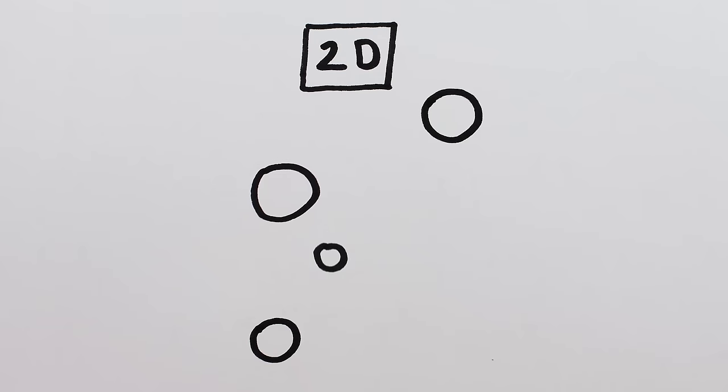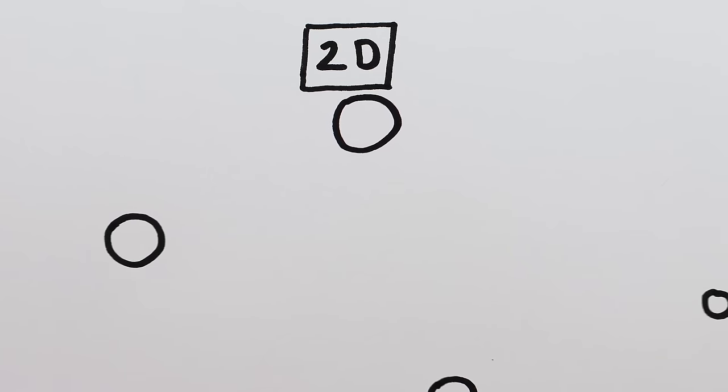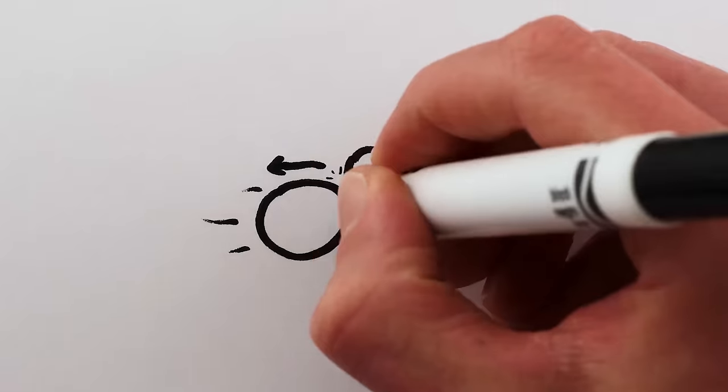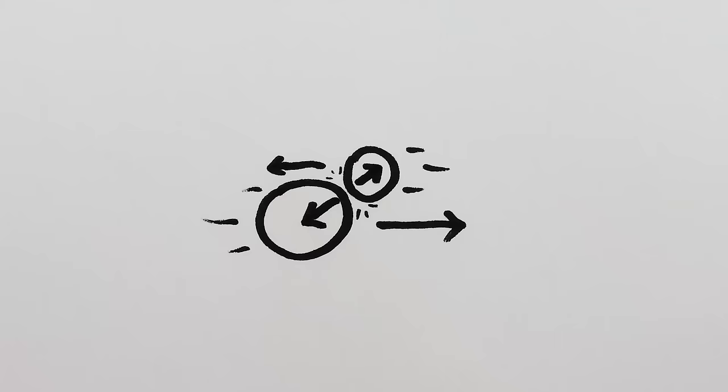And what about in two or three dimensions, where most collisions aren't perfectly one-dimensional? Well, the truth is, they secretly are. Most of the time, collisions in 2D or 3D result in a net force between the objects which is only in one direction,